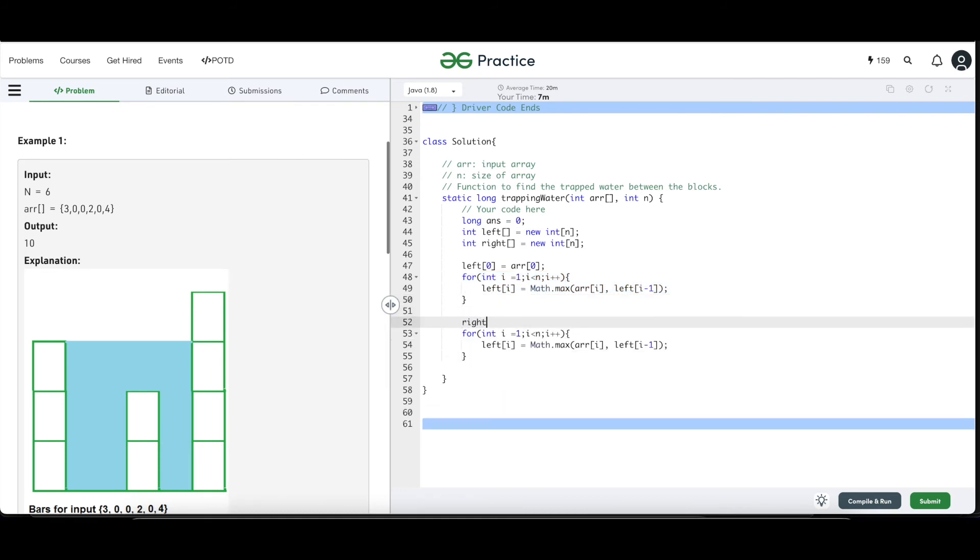And the same thing we are going to do for the right array preprocessing. In case of right array also, since we're starting from behind, the last most element is going to be the last element itself. So right of n minus 1, because n is the length of the array, so n minus 1th index, n minus 1th index is going to be the last element. So that is going to be the last index of the ARR, which is again n minus 1. And from here, now we are going to start the traversal from n minus 2 at index. Here also math.max of ARR of i and right of i plus 1.